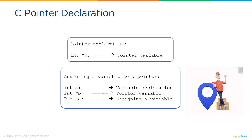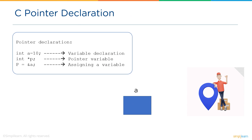This means that the pointer is holding the address of a variable of type int. Let's look at the diagram and understand how pointers work in C. When we declare a variable, memory is allocated and the value of the variable is stored in that memory at some address — in this example let's consider the address to be 2000. Similarly, when a pointer is declared, memory space is allocated at address 1000.